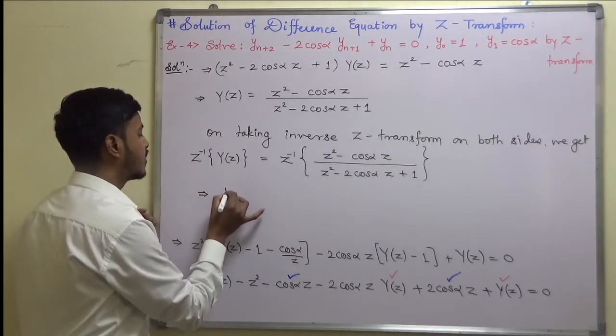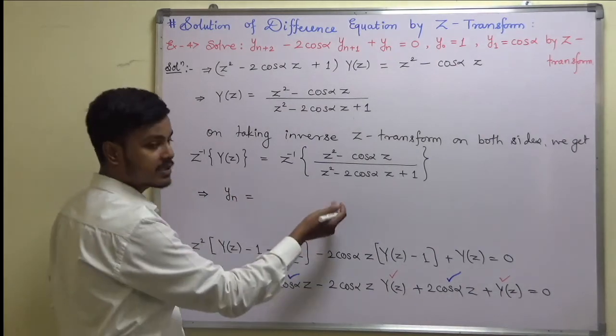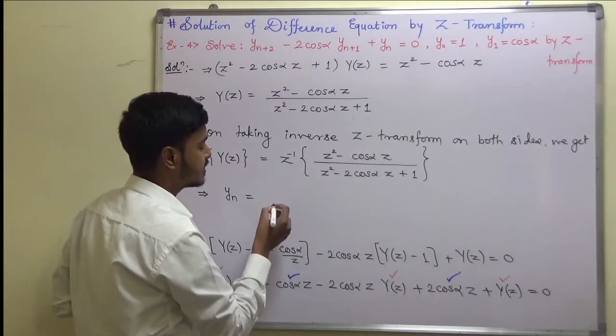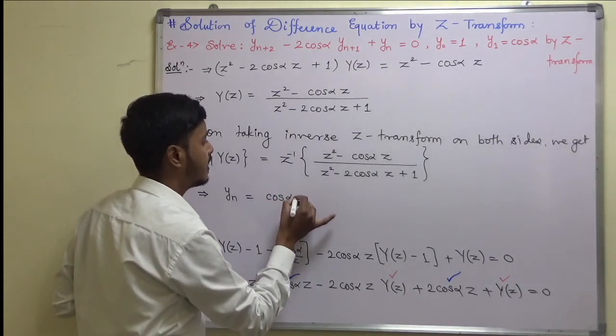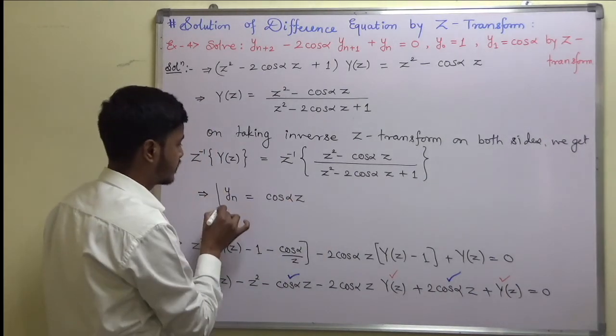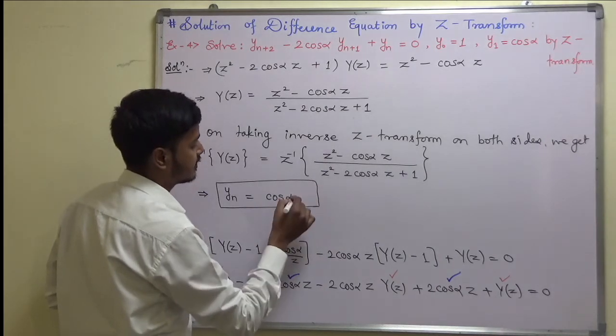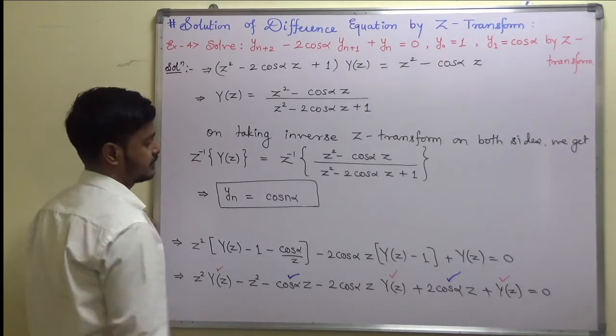So this is nothing but y(n) is equal to... This is the standard formula. So z^(-1) of this is nothing but cos(n·alpha).